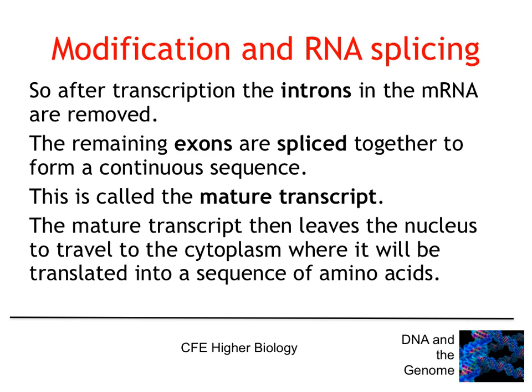The introns that aren't coding for the protein are not going to be involved in making it. So after transcription, the introns present in the messenger RNA are removed, and the leftover exons are spliced together to form a continuous sequence, which forms what is called the mature transcript. The mature transcript then leaves the nucleus to travel to the cytoplasm, where it will be translated into a sequence of amino acids.